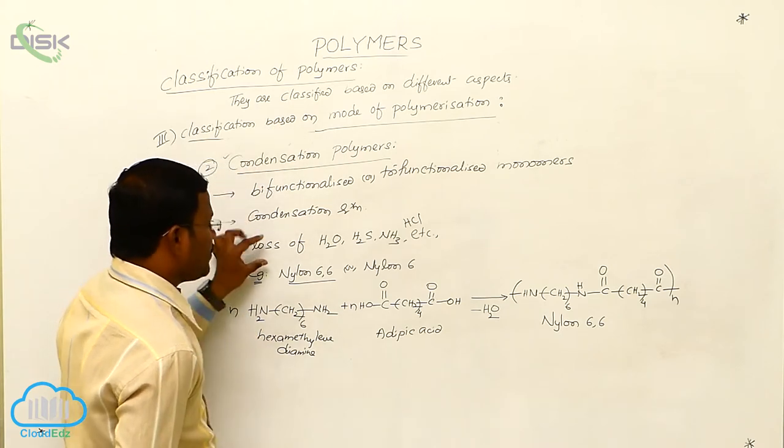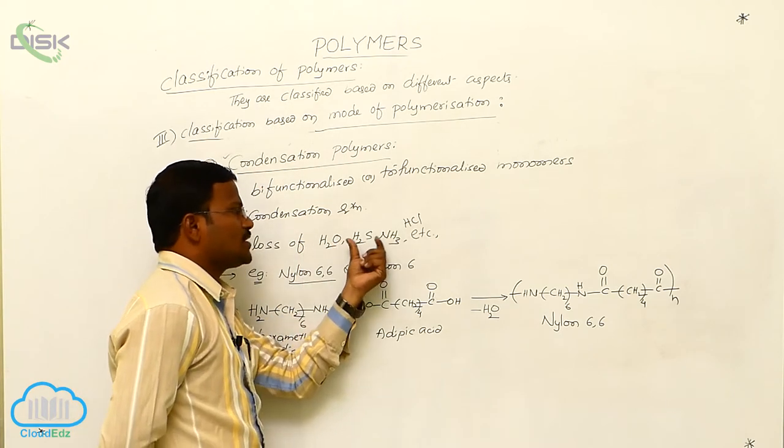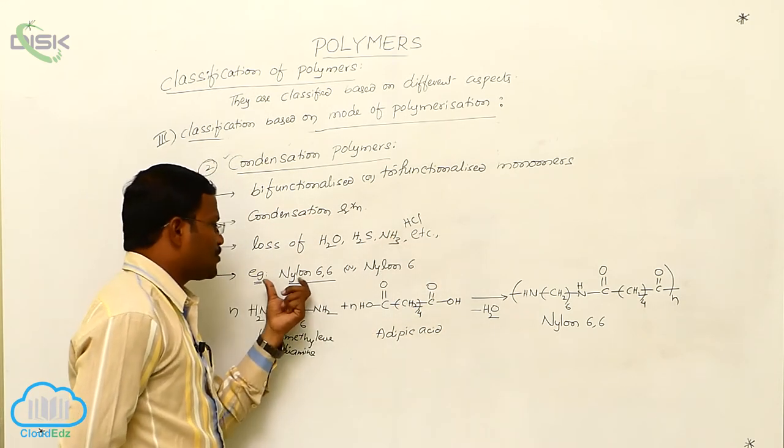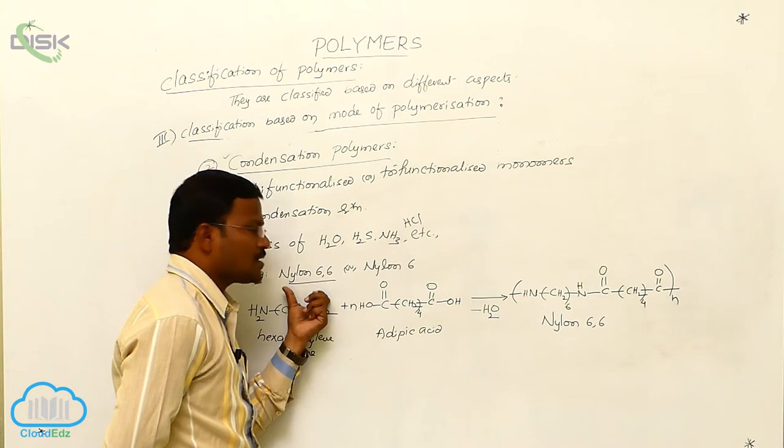During the condensation, there may be loss of neutral species like water, H2S, ammonia, HCl, etc. Examples for these condensation polymers are nylon 6-6 or nylon 6.